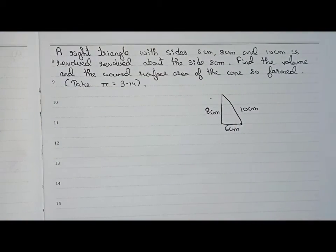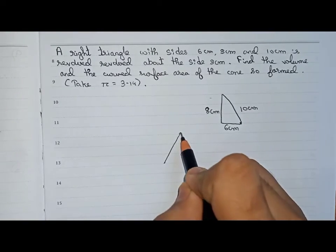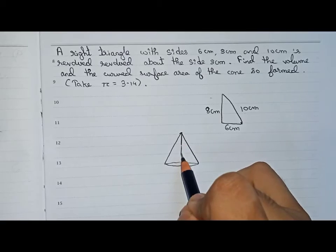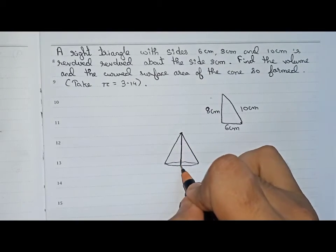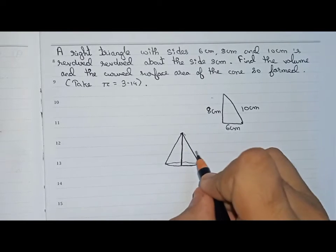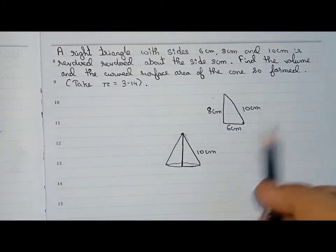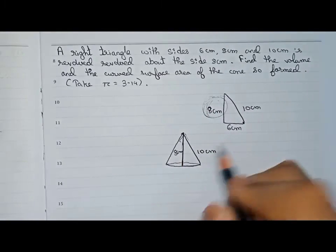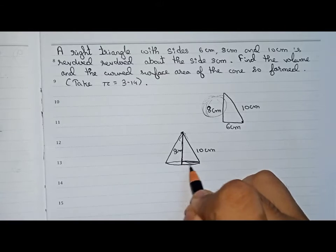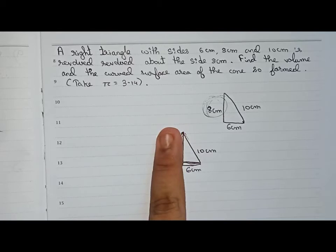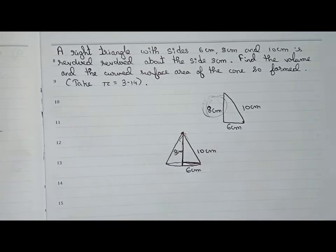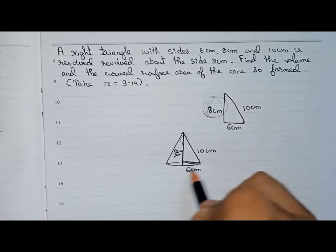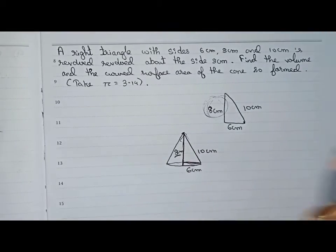Now we need to form a cone by revolving this triangle. If we draw the cone, we can see that drawing a straight line through the middle gives us a right angle triangle. This side is 10 centimeter. Since we revolved around the 8 centimeter side, the height becomes 8 centimeter and the radius becomes 6 centimeter. So for this cone, 8 centimeter is the height, 6 centimeter is the radius, and 10 centimeter is the slant height.